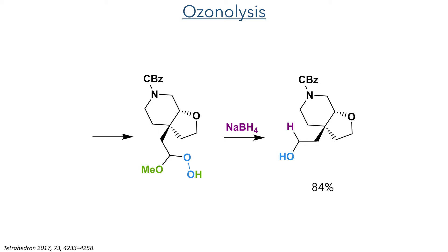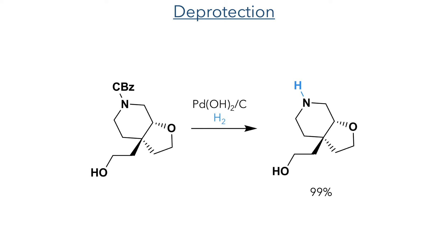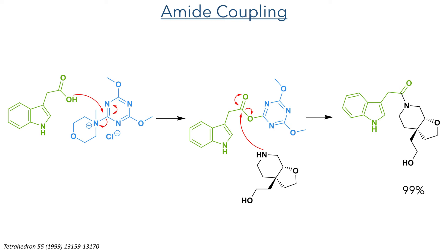The next step was a deprotection of the CBZ group with palladium hydroxide on carbon and hydrogen gas, which produced the free amine in quantitative yield. The indole carboxylic acid was added directly to this reaction mixture along with DMT-MM, which served as the coupling reagent. This activates the carboxylic acid by acting as an electrophile, forming an active ester upon expulsion of the N-methylmorpholine group. This makes the carboxylic acid more electrophilic, allowing it to react with the deprotected amine to form the target amide in 99% yield.